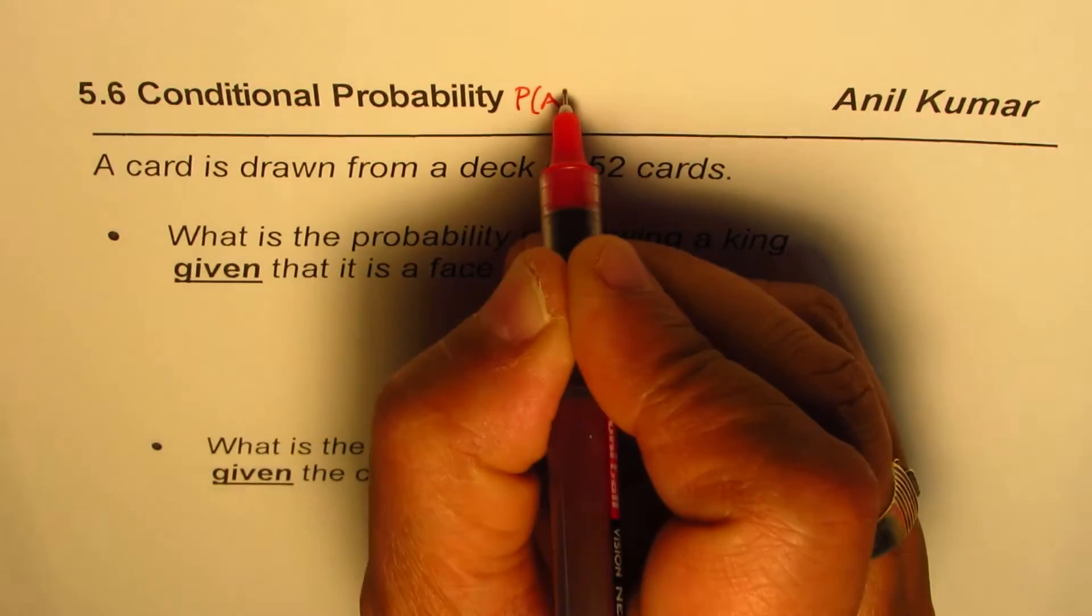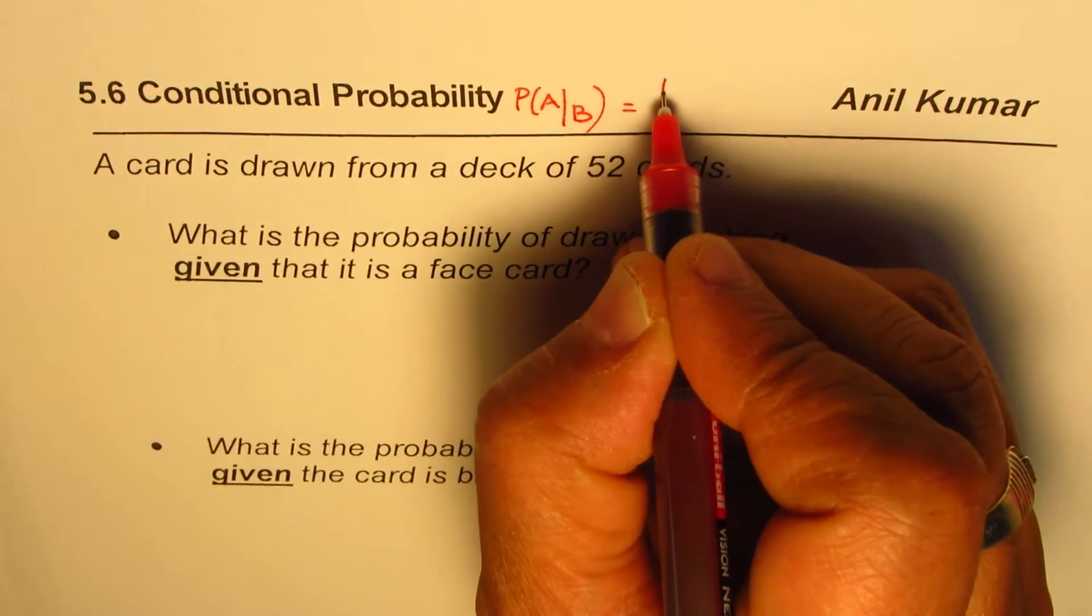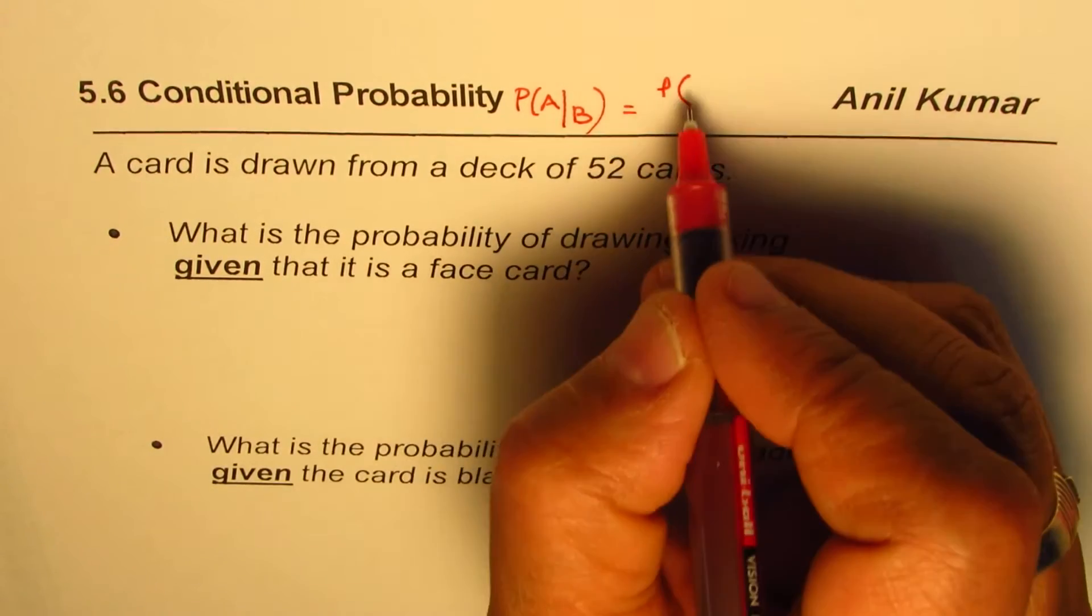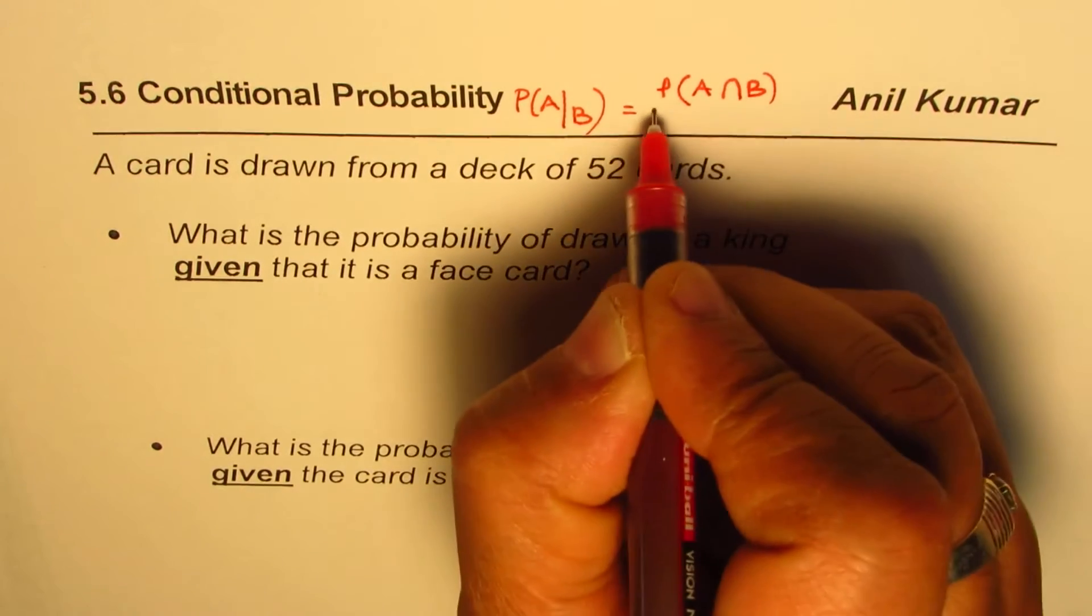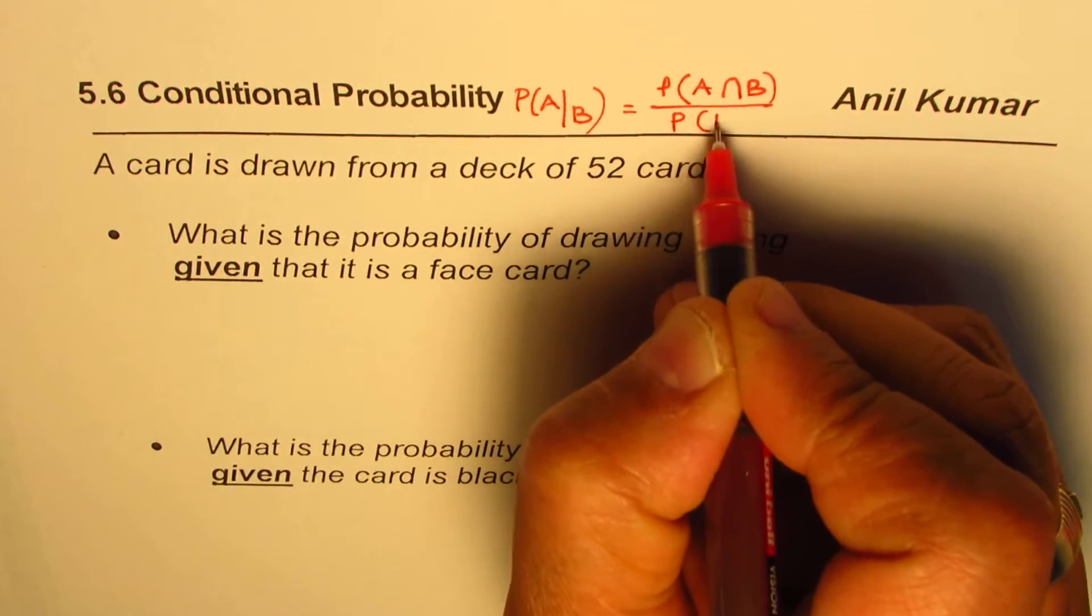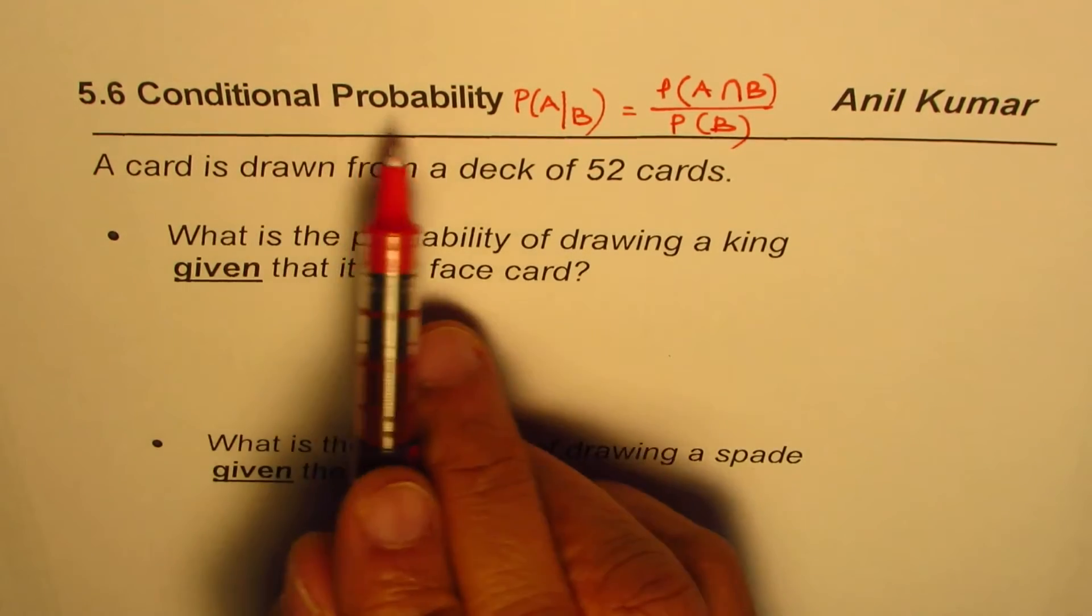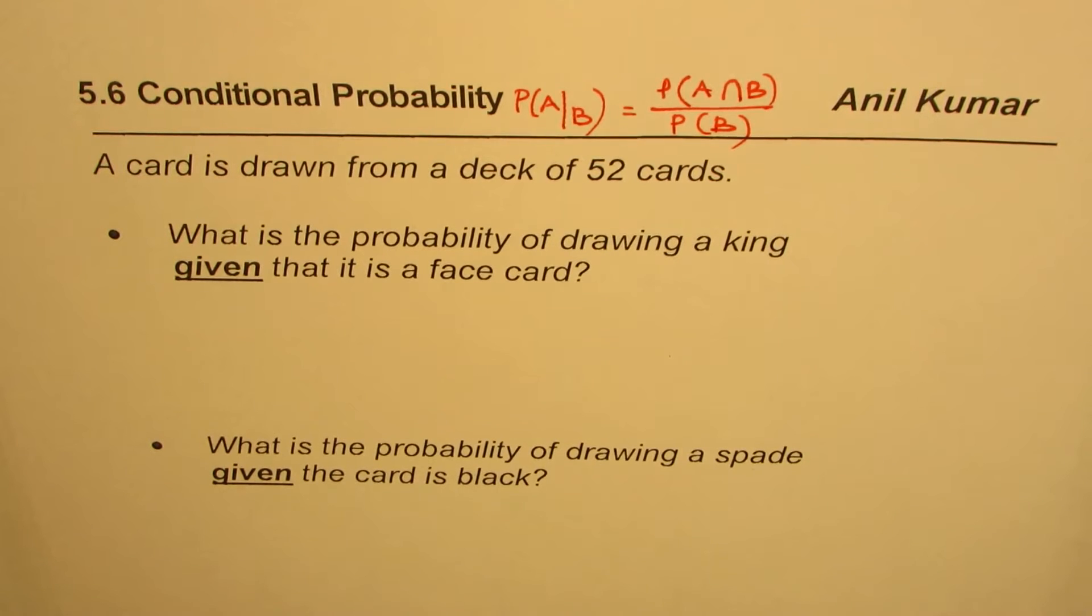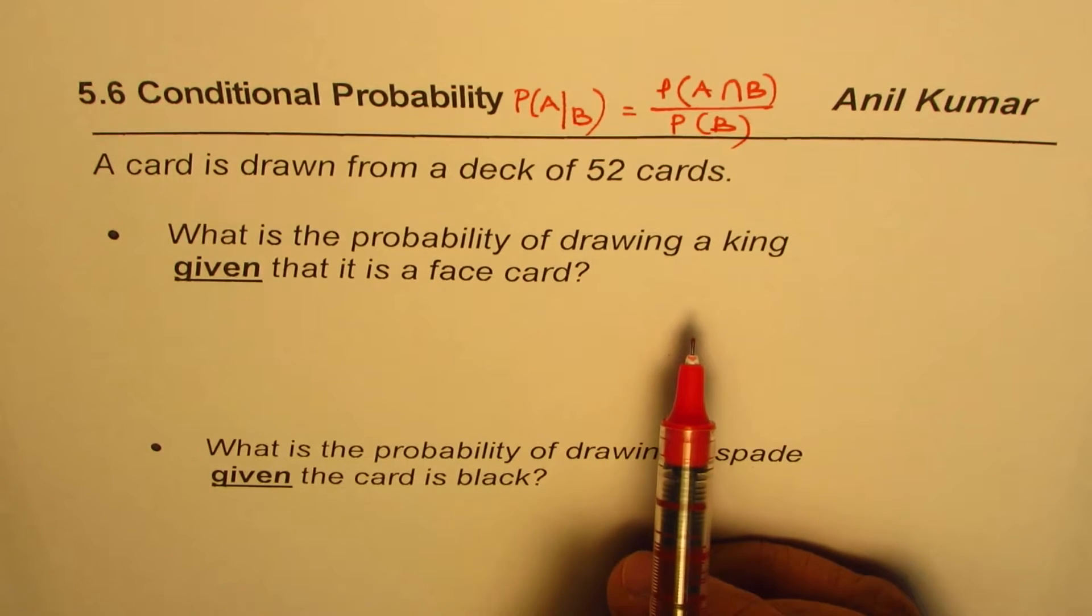to find probability of event A when B has already happened, then it is the ratio of probability of event A and B - that is the intersection - divided by probability of event B. So that is the formula which you can use to find any conditional probability solution. That should be used most of the time. In my approach here, I will use common